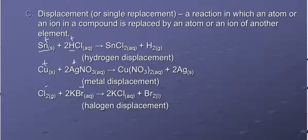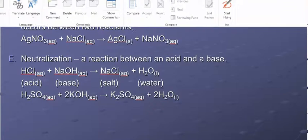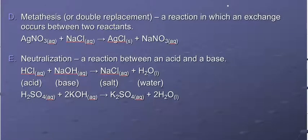But all single replacements have a compound plus an element. And your products are a compound and an element. Fourth type is metathesis or double replacement. These are reactions where you have two compounds and the positives switch with each other. So, for example, silver nitrate plus NaCl.